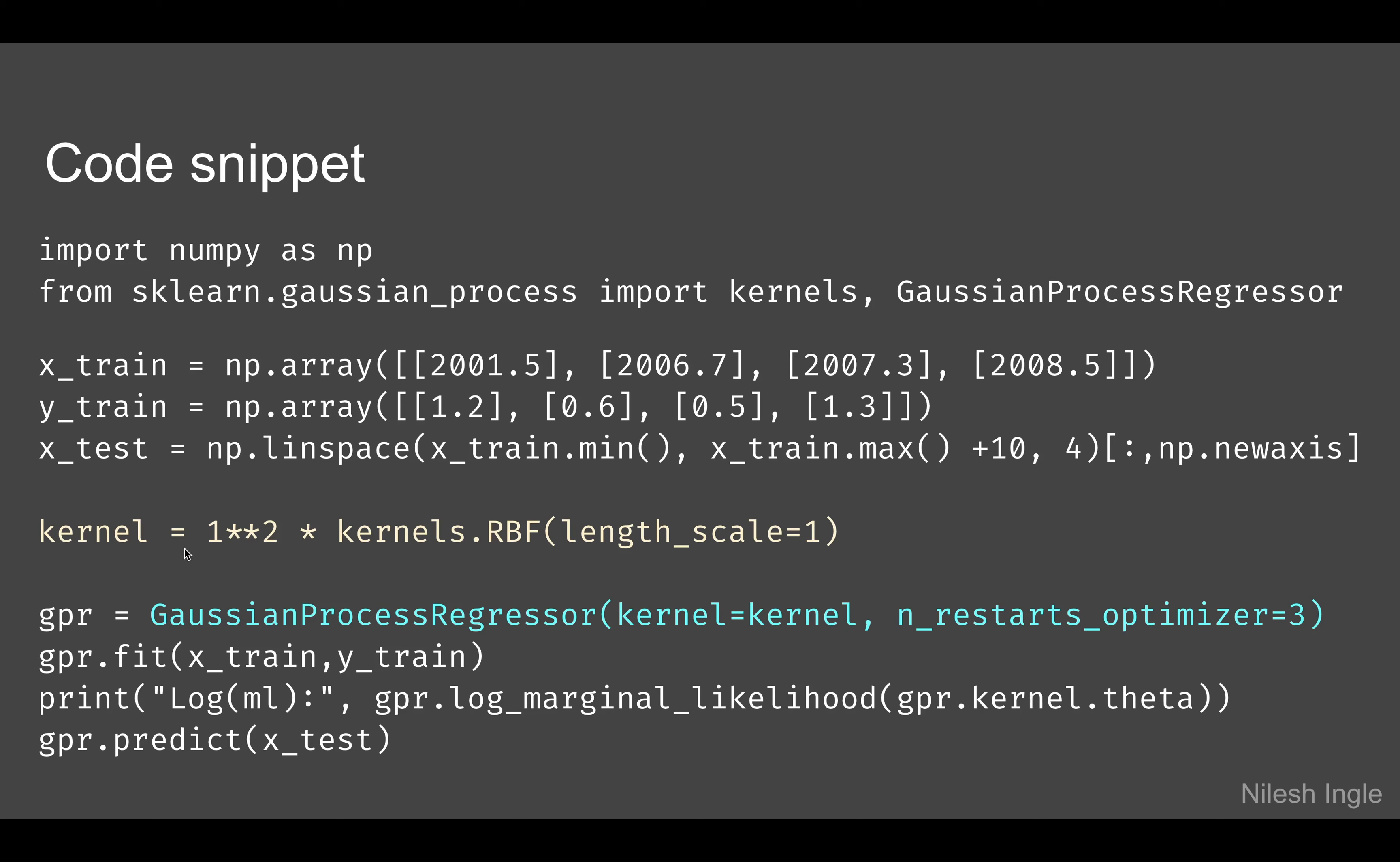A kernel—here this is showing just one kernel, RBF—and within GaussianProcessRegressor then we can pass on this variable name kernel to input that kernel.